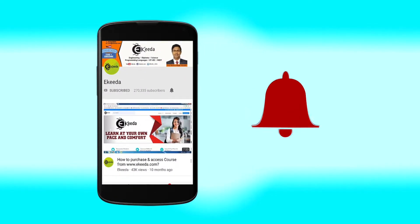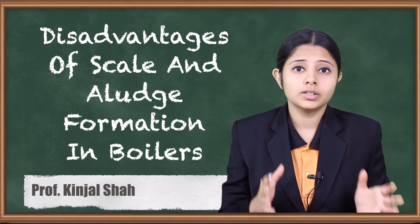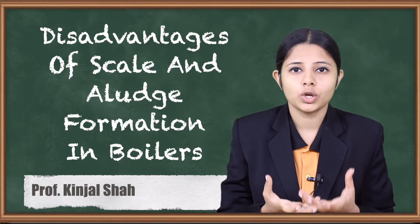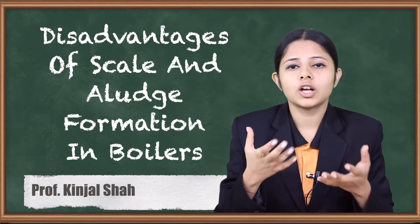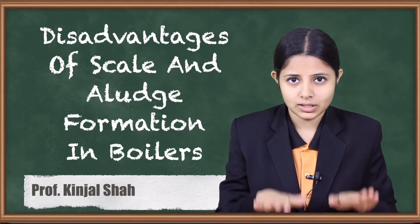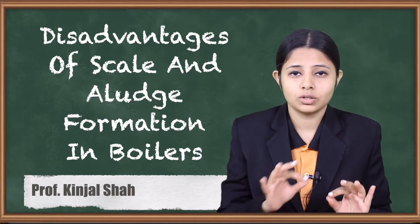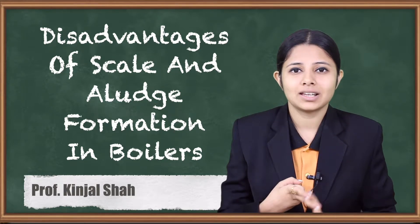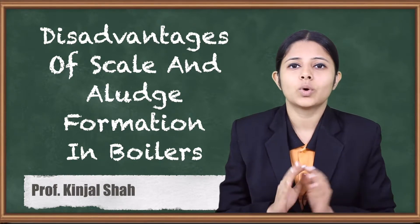Hello friends, today we are going to study about all the disadvantages happening due to the scales and the sludge which are formed in the boiler. Boiler is used for converting hard water to soft water — water is boiled in a big boiler so that salts and precipitates settle down and you can get pure soft water out of it. Because of these salts present inside the boiler, they form something known as scales and sludges, which have a lot of disadvantages.